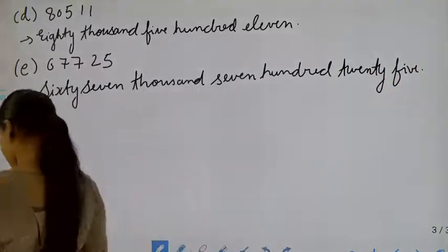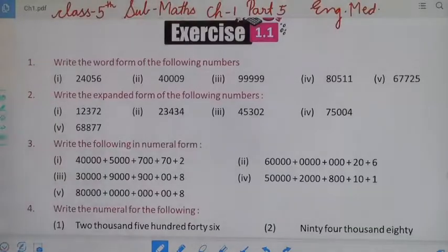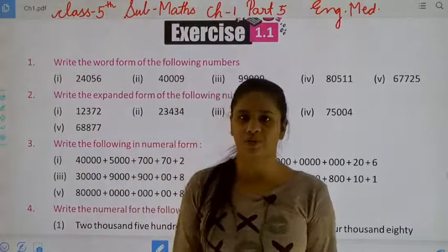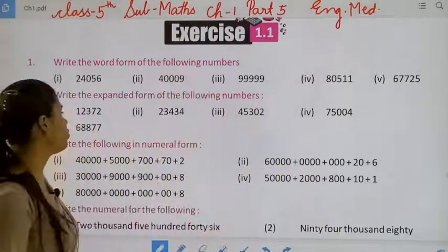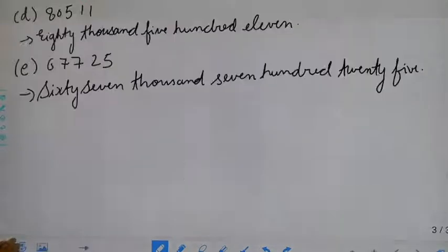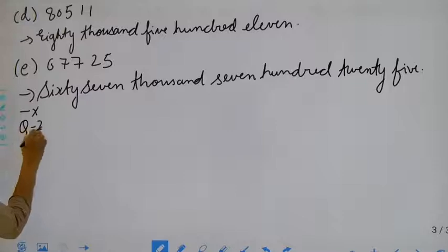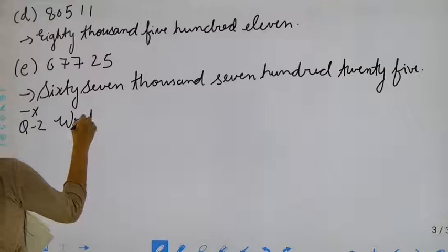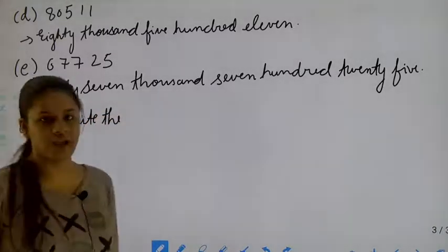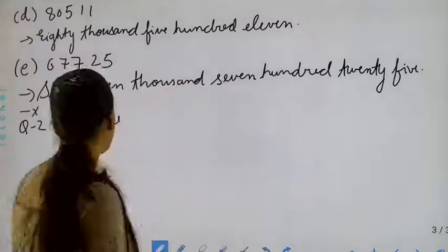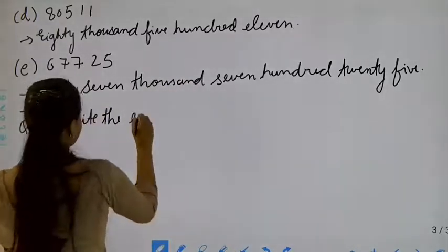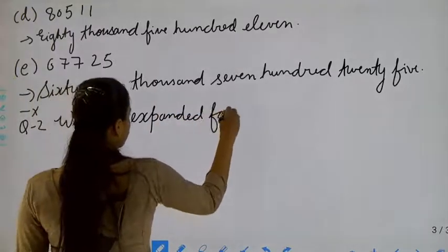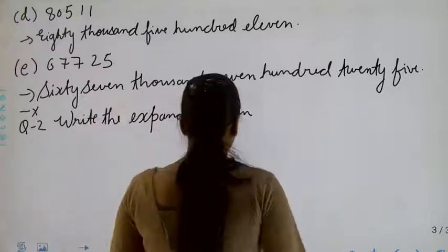Okay students, now move to the next question, that is: write the expanded form of the following numbers. In this question, we have to expand the numbers. You have to leave one line after every question, then write the second question — write the expanded form of the following numbers.